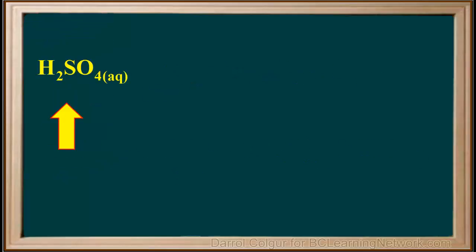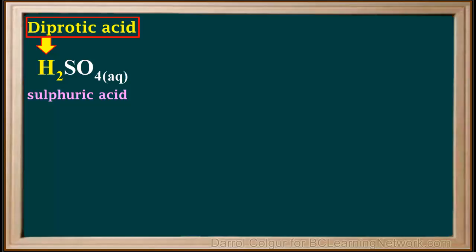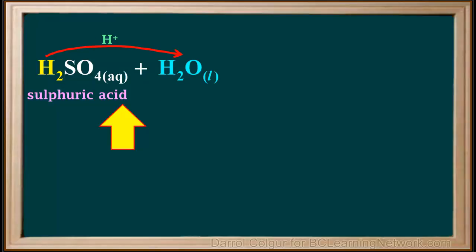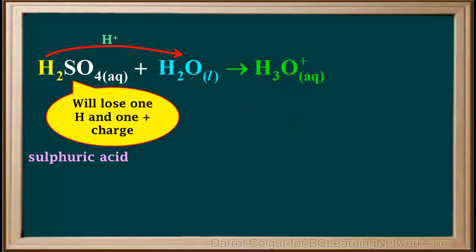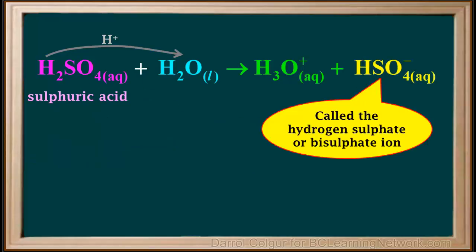Consider H2SO4, called sulfuric acid. It has two H atoms at the beginning of the formula. Acids that have two protons they can donate are said to be diprotic, so H2SO4 is a diprotic acid. When diprotic acids like H2SO4 are added to water, they do not lose both protons at once — they lose one at a time. In the first step, H2SO4 loses one proton to water, producing H3O+. Because it loses one H and one positive charge, the product is HSO4-, called the hydrogen sulfate or bisulfate ion.